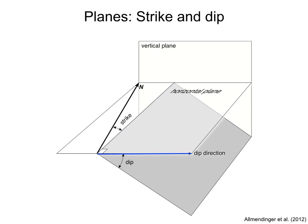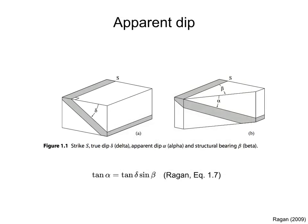Dip is an angle between 0 and 90 degrees: 0 is a horizontal plane, and 90 is a vertical plane. Notice that if we measure the dip of the plane on a vertical section that is not perpendicular to strike and along the dip direction, we will measure an apparent dip. The figure to the left shows the true dip of the plane, delta, measured on a vertical section perpendicular to strike and along the dip direction.